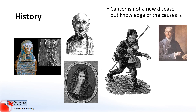Later, the surgeon Henry Butlin continued the work by observing that scrotal cancer was almost exclusively an English disease — it was almost unheard of on the European continent. He thought this was most likely due to a lack of protective clothing that was used in the rest of Europe. He used what we now call a natural experiment by comparing the groups of chimney sweeps in different countries.